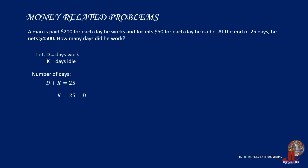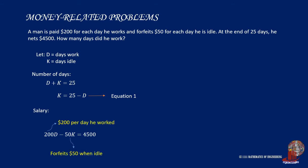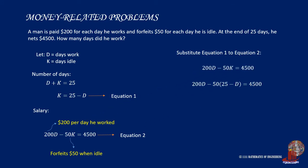To extract K, we transpose D to the other side, giving K is equal to 25 minus D. Take this as equation 1. For the salary: a man is paid $200 per day worked and forfeits $50 per day idle, giving us 200D minus 50K is equal to 4,500. Consider this as equation 2. By substituting equation 1 into equation 2, we get 200D minus 50 times (25 minus D) is equal to 4,500.